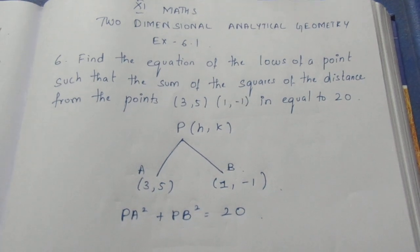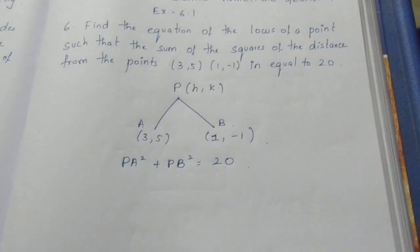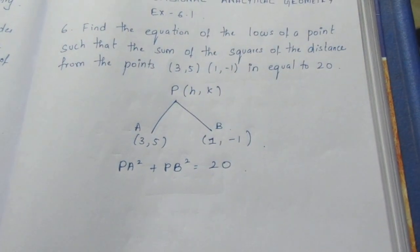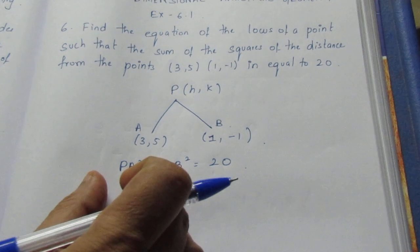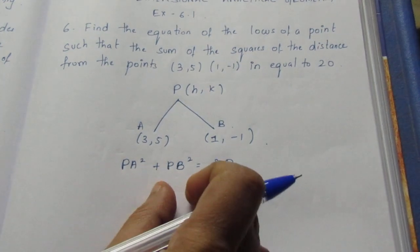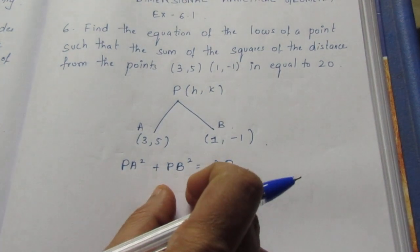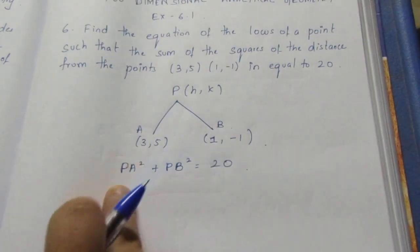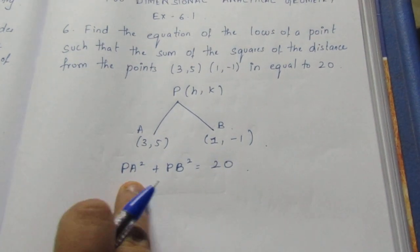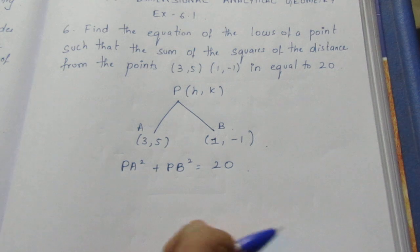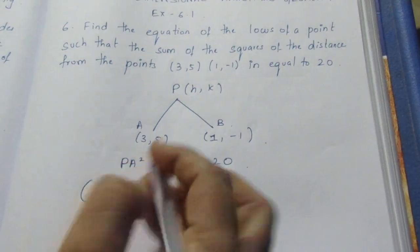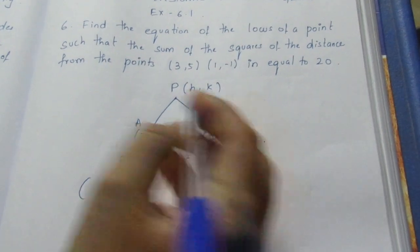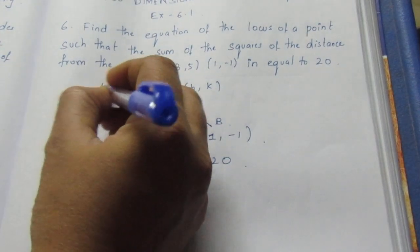We apply the distance formula. PA is the distance from P to A, and PB is the distance from P to B. Distance is the root of the sum of squared differences. So we square each distance and work with the squared terms.